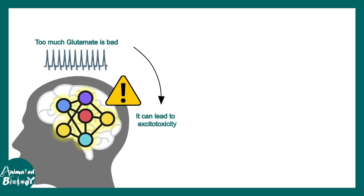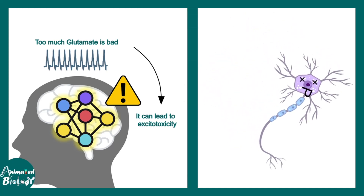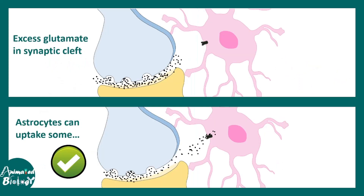It turns out too much glutamate is actually bad. When there is too much glutamate, there is high, uncontrolled excitability — a situation known as excitotoxicity, or glutamate-induced excitotoxicity — which can lead to death of the neuron. This happens in many diseases; one example is epilepsy, where there is hyper-excitability and too much glutamate. Excess glutamate in the synaptic cleft is a big problem that can be solved by astrocytes, because astrocytes can take up glutamate and maintain this balance — a very important role for proper synaptic functioning.